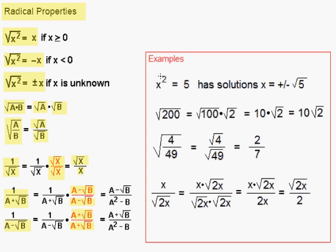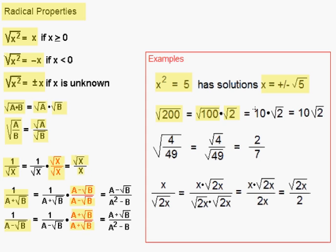Let's look at the examples on the right. If we have an equation x squared equals 5, that is going to have solutions x equals plus or minus the square root of 5. In the next example, we want to simplify the radical square root of 200. We can do that by rewriting 200 as 100 times 2 and then applying the product rule to rewrite it as the square root of 100 times the square root of 2. The square root of 100 turns into 10, and the square root of 2 we leave as is, so our result is 10 square roots of 2. In the next example, we have the square root of the fraction 4 forty-ninths. By using the quotient rule, we can rewrite that as the square root of 4 over the square root of 49, and that equals 2 sevenths.